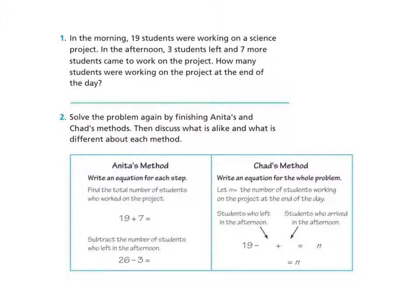When you're solving word problems, I like to highlight the important information that's going to help me solve the problem. So let me go back and read: in the morning, 19 students were working on the science project. I'm going to underline 'morning' and '19 students.' In the afternoon, 3 students left, so I'm going to underline 'afternoon' and '3 students left.' And then 7 more students came to work — those are my important pieces of information that I'll underline.